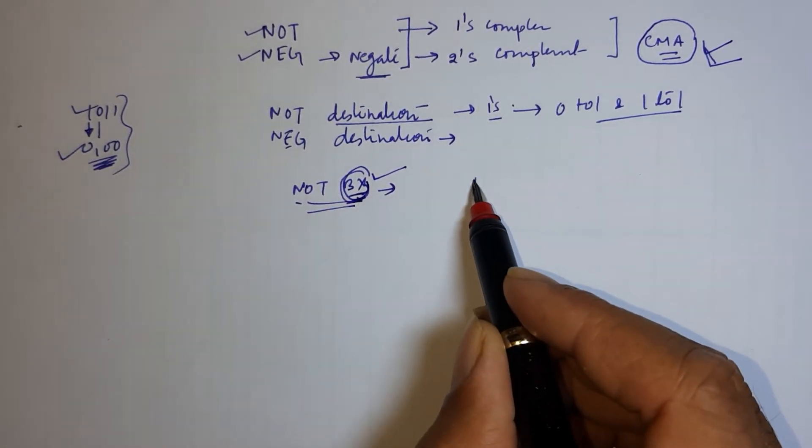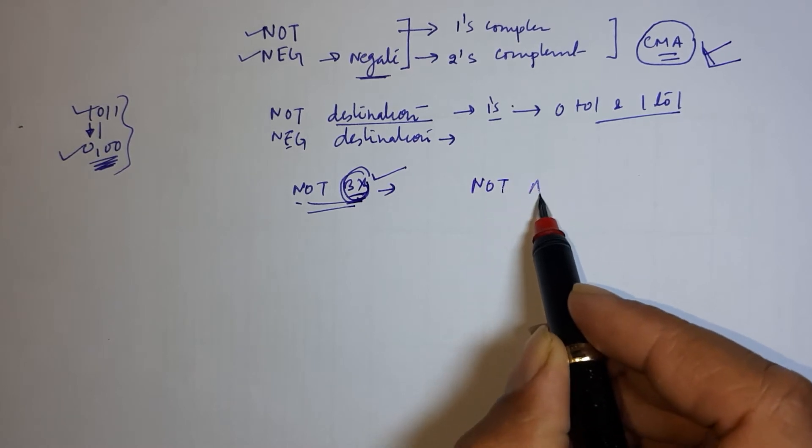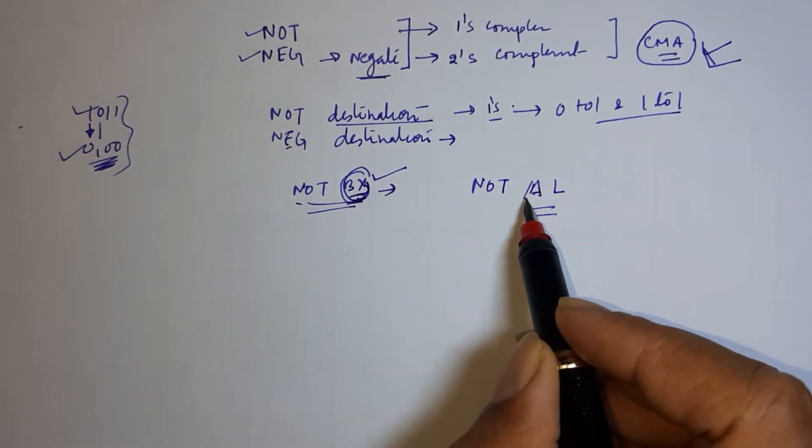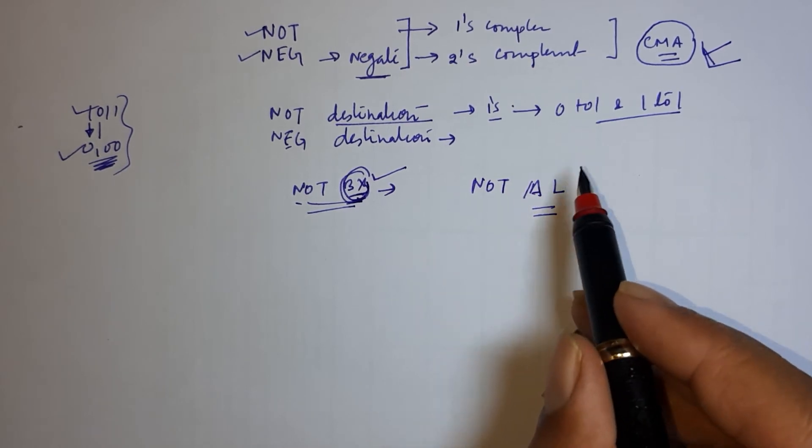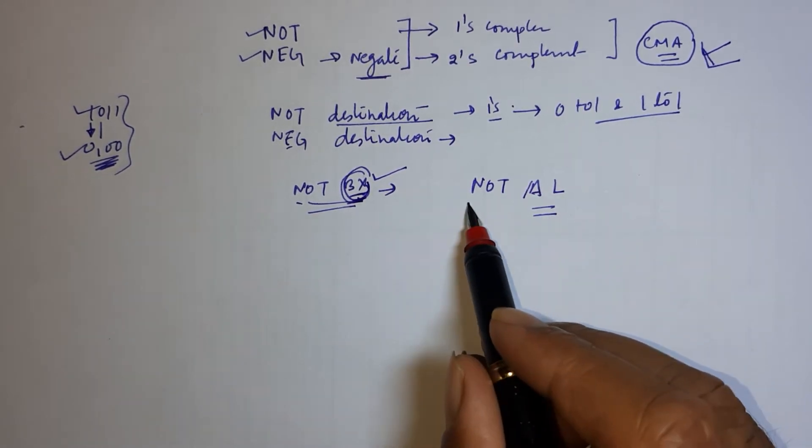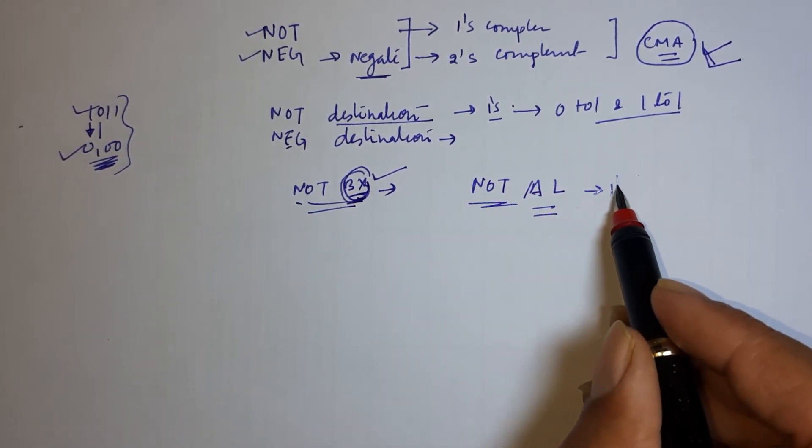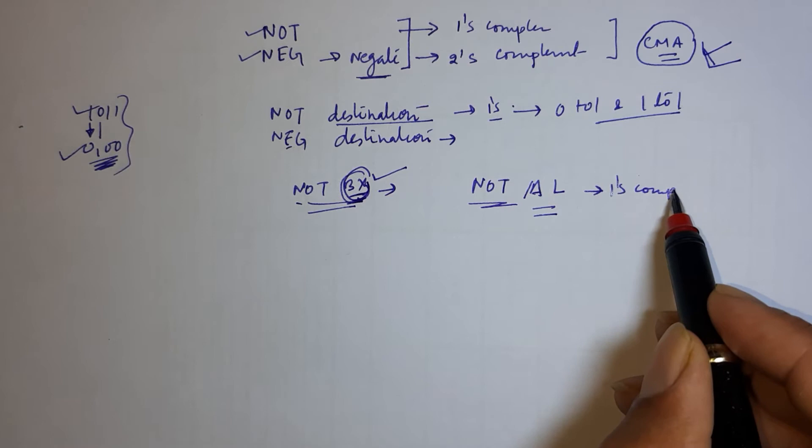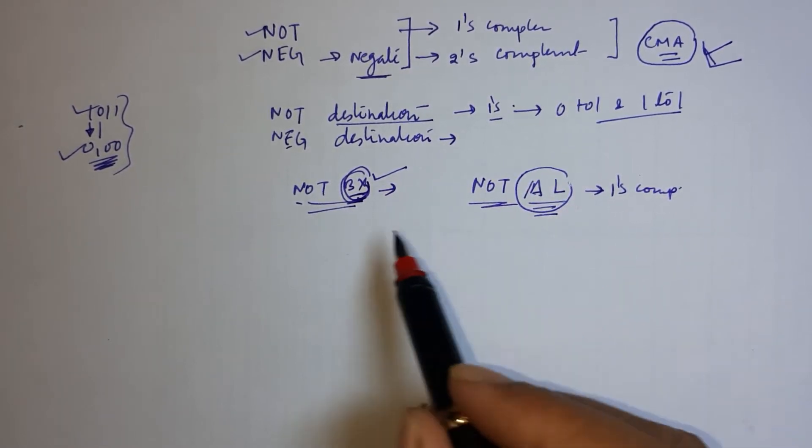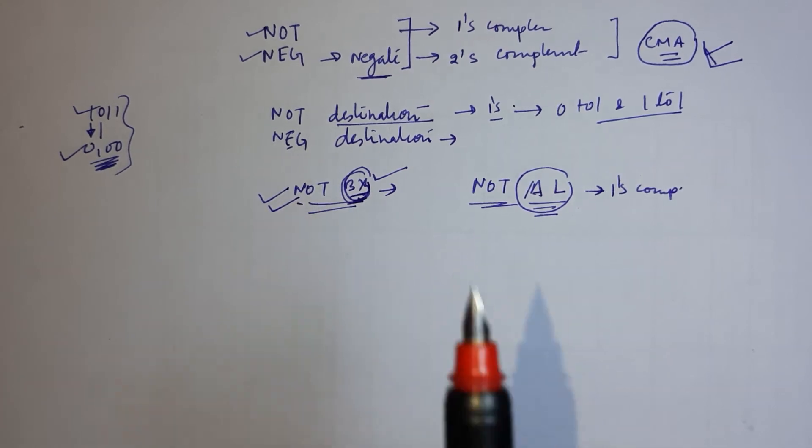This is expression. Suppose you have written NOT AL, means whatever content of AL will be, that will be inverted means 1 become 0, 0 become 1, 1 become 0. Basically, this is going to find one's complement of whatever register or memory given at destination. So this is working of NOT.